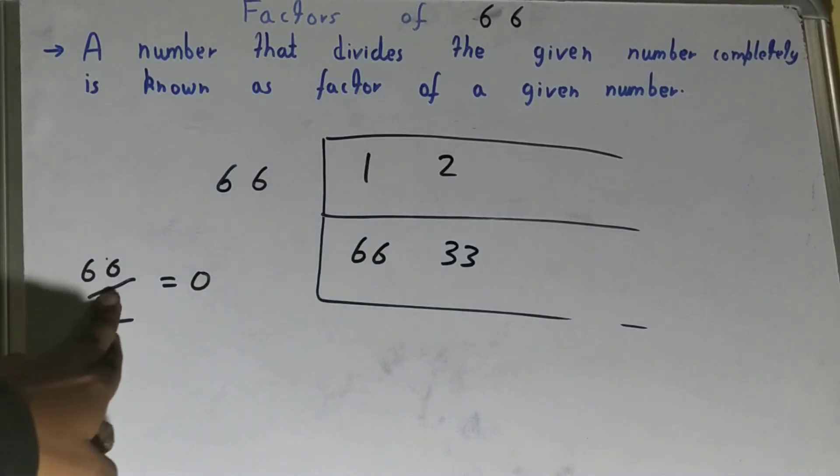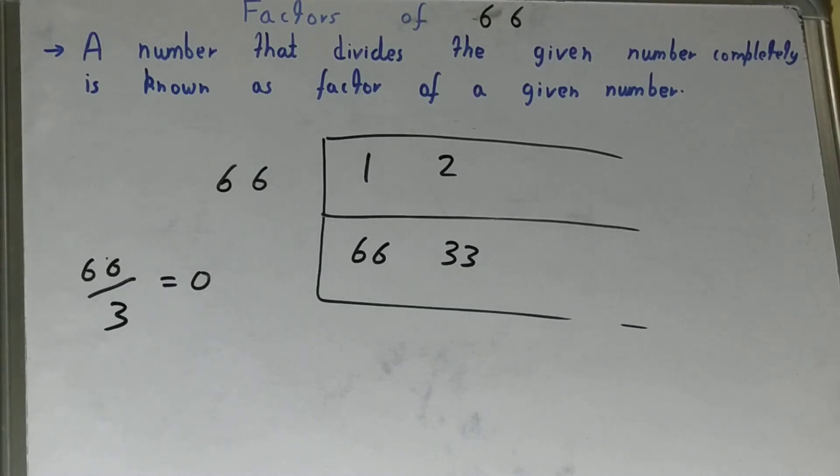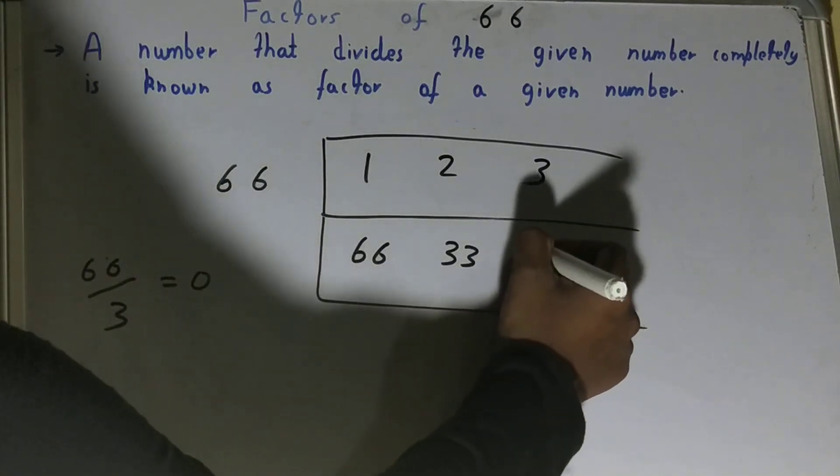After 2 comes 3. If you divide 66 by 3, will you get the remainder zero? Yes, so 3 is a factor. Three times what is 66? Three times 22 is 66, so 22 is also a factor.